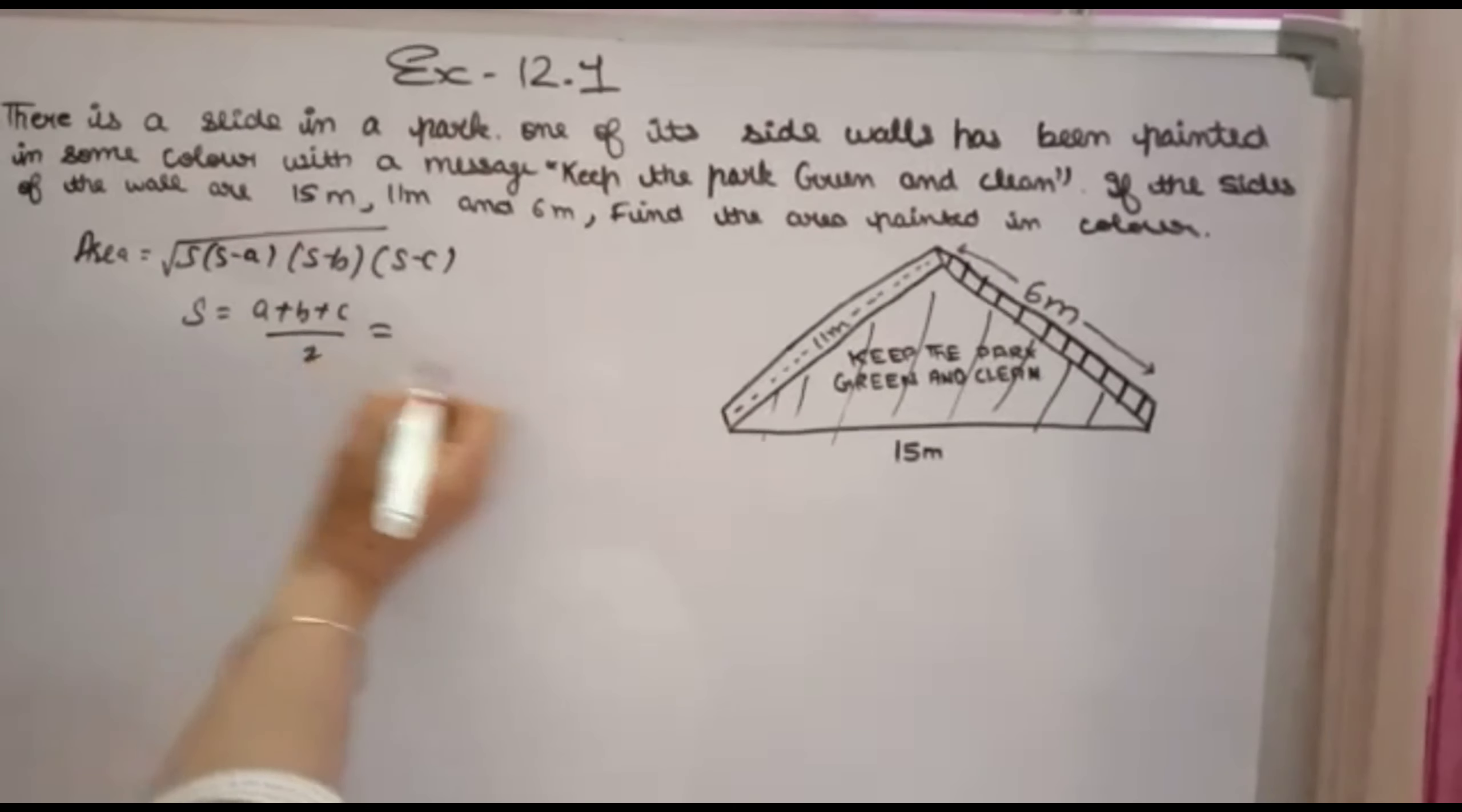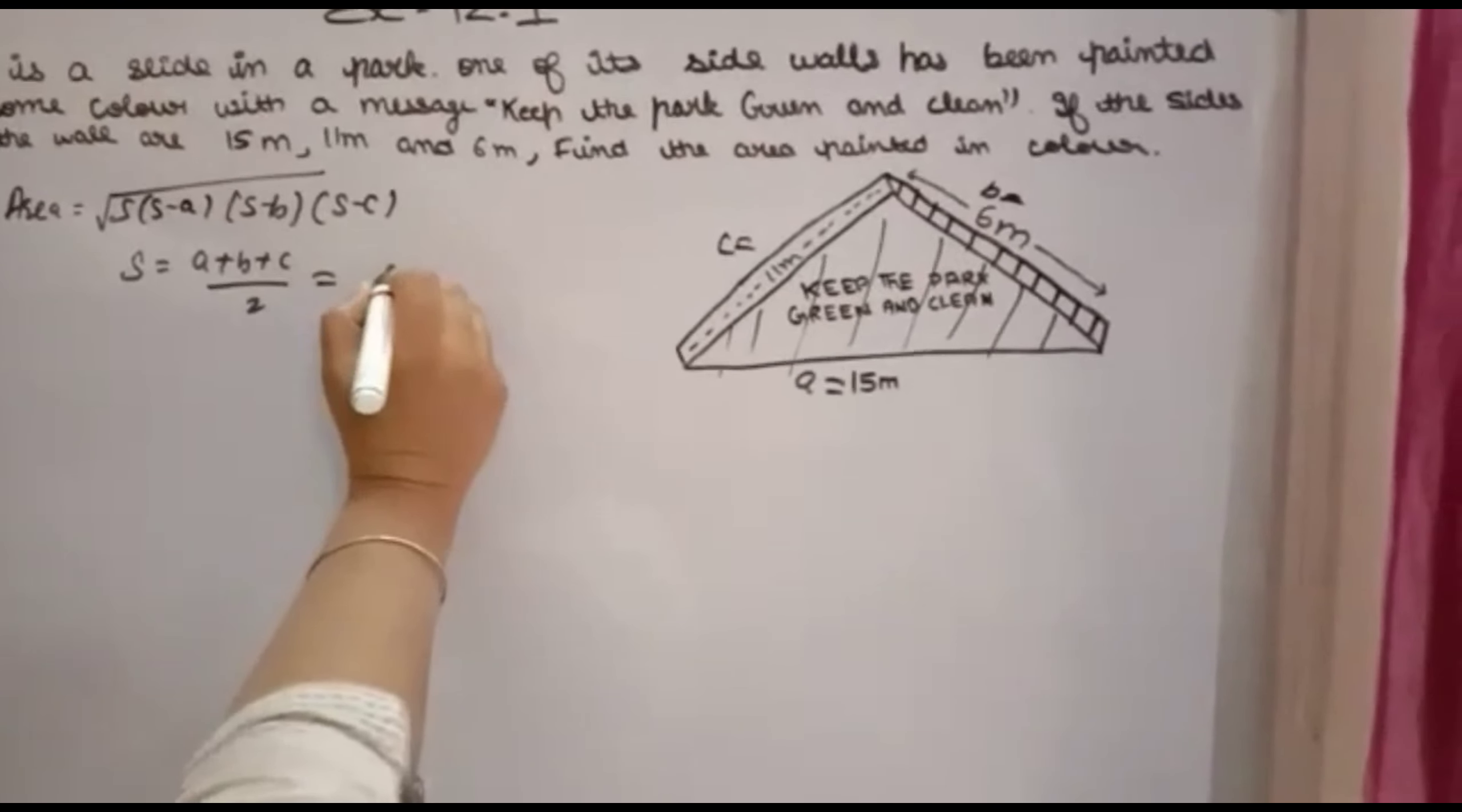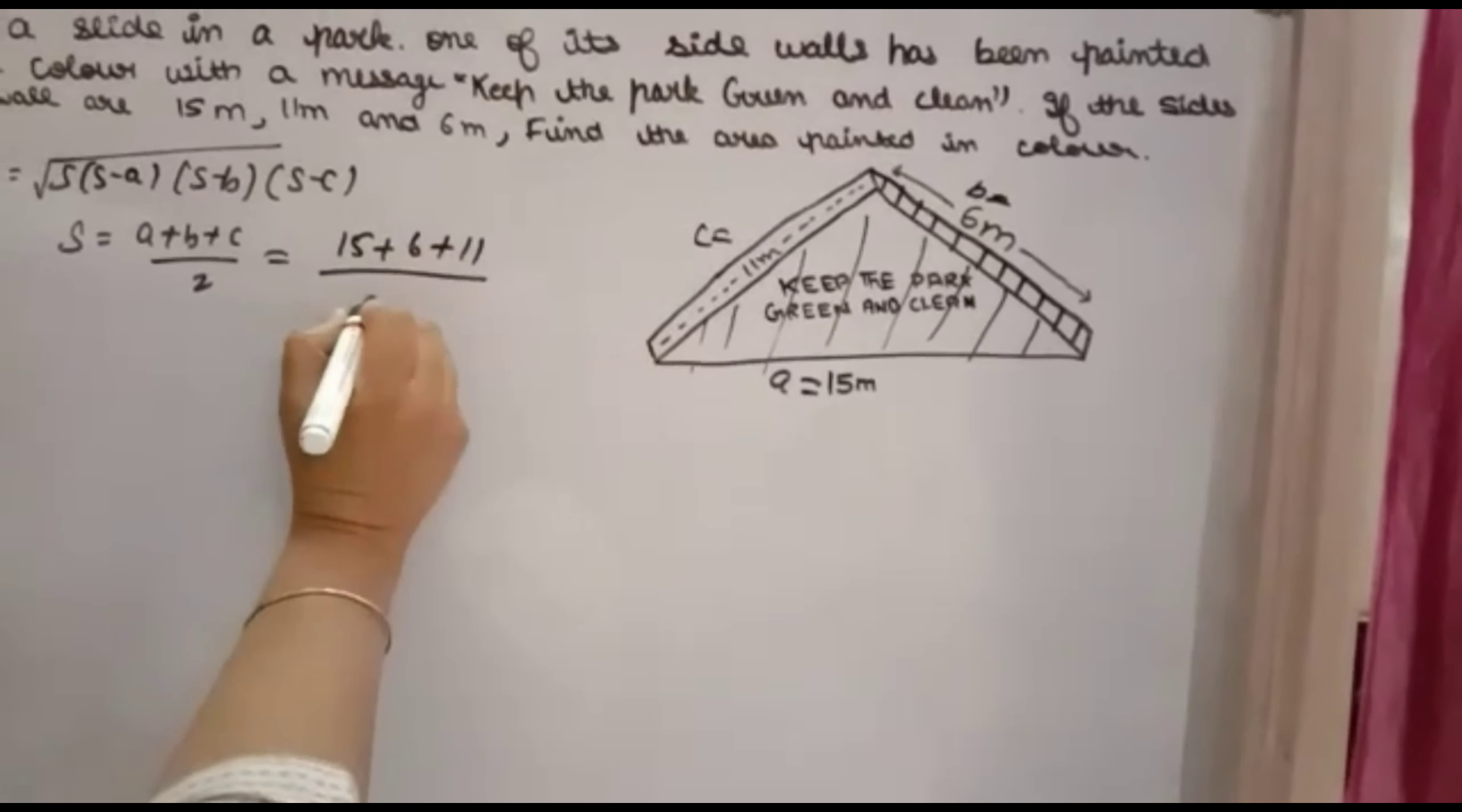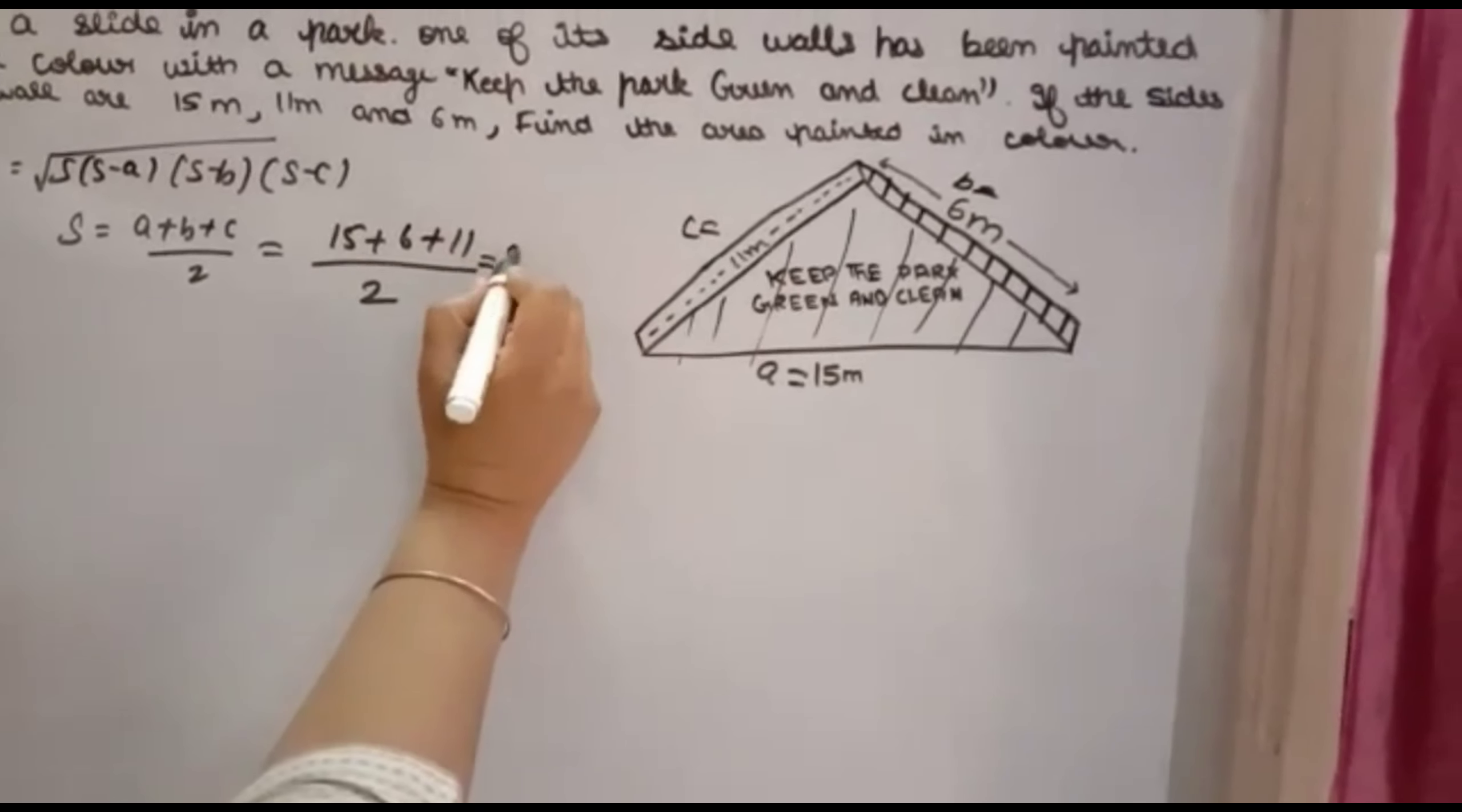a is 15 meter, b is 6 meter, and c is 11 meter. So you will write s = (15+6+11)/2. 15+6 = 21, 21+11 = 32, 32/2 = 16. So 16 meter is the semi-perimeter.